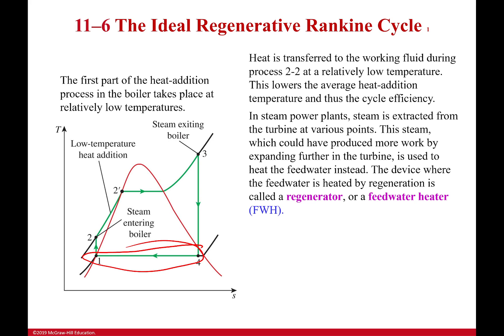In a steam power plant, things are very complex and we can have steam extracted at various points. If I extract it at different points it might not do work, but what I can do is use that steam to heat the water that I'll be heating using my boiler — so I can use this steam to preheat my water. This is a form of regeneration.